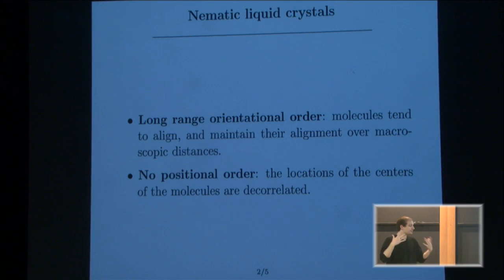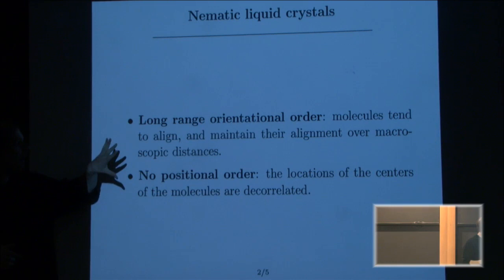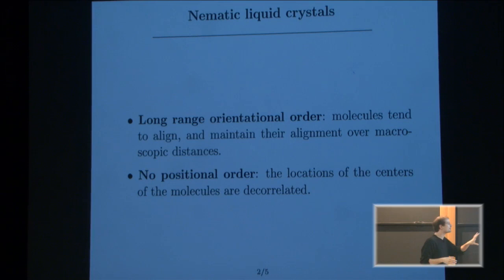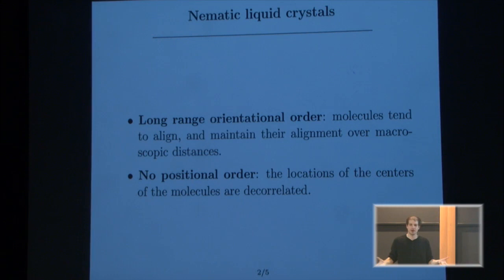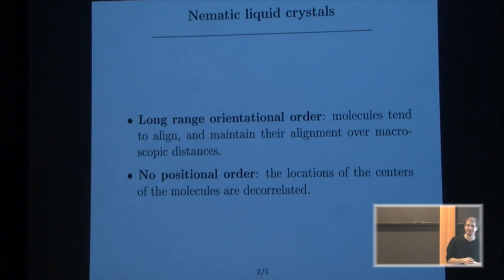And at the same time, there's no positional order, which means that the locations of the centers are disordered, which means that the molecules can flow one against another. There's no constraint on where they can go. And now these properties have macroscopic consequences. The fact that there's no positional order means that my material behaves like a liquid. It flows. I can put it in a bottle. I can have a droplet of liquid crystal. It behaves like a liquid.